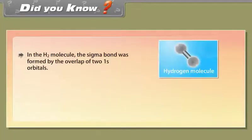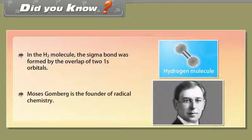Did you know? In the hydrogen molecule, the sigma bond was formed by the overlap of two 1s orbitals. Moses Gomberg is the founder of radical chemistry.